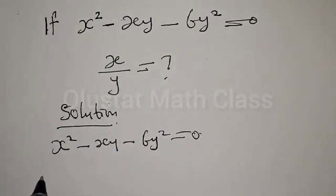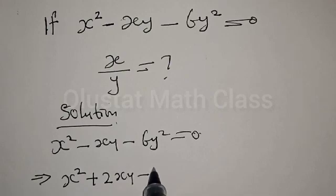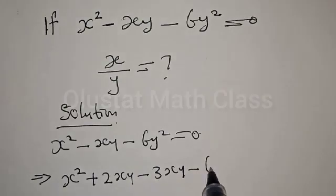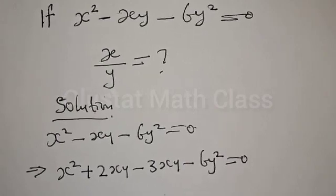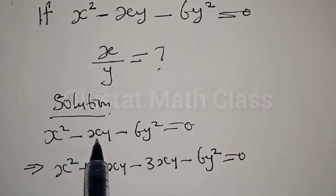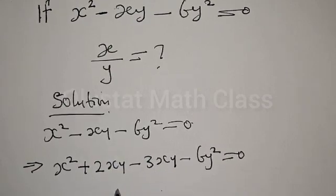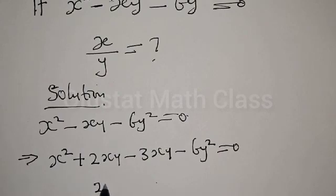Solution: we have x squared minus xy minus 6y squared is equal to zero. This is a quadratic equation. This implies that we have x squared plus 2xy minus 3xy minus 6y squared equal to zero. We look for two numbers such that when you multiply the product will give you minus six.